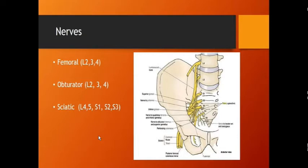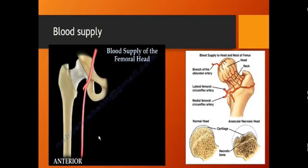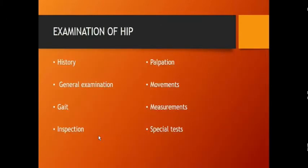Blood supply of the femoral head is important and sometimes comes as a theory question. The branches include the obturator artery, lateral femoral circumflex artery, and medial femoral circumflex artery. This was the overall anatomy of the hip joint. Now we will come to examination, which is divided into eight broad categories.